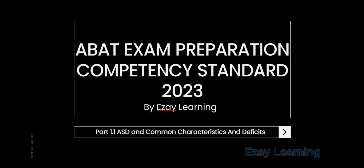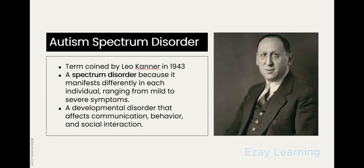The first subtopic of autism core knowledge is ASD and common characteristics and deficits. Starting with the basic introduction of autism spectrum disorder — it is a term coined by Leo Kanner in 1943. Do remember this is a spectrum disorder because it manifests differently in each individual, ranging from mild to severe symptoms.